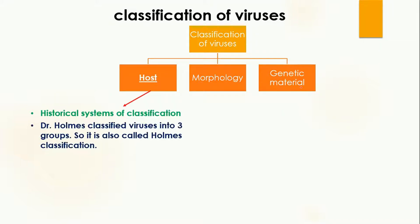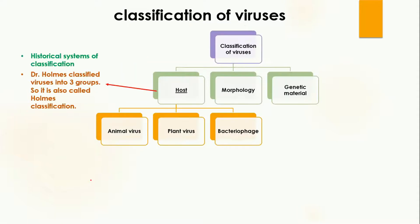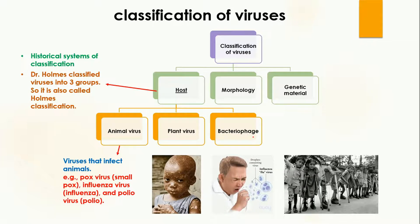First, classification on the basis of host. This is a historical system. Before detailed analysis of viruses, they were divided into three categories by Dr. Holmes on the basis of the host they were infecting. This classification is also known as Holmes classification. The three types are: animal virus, plant virus, and bacteriophage.